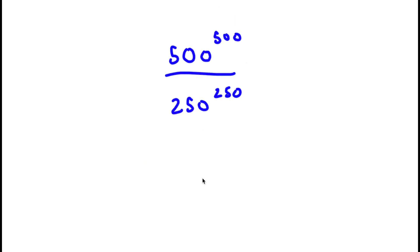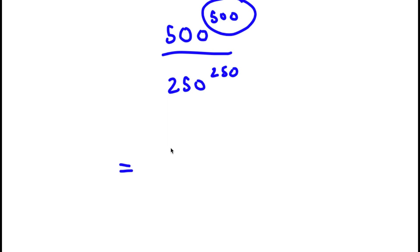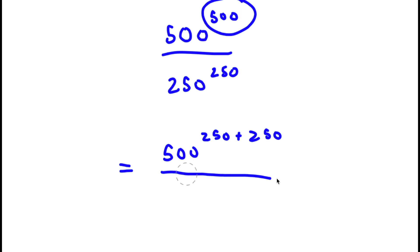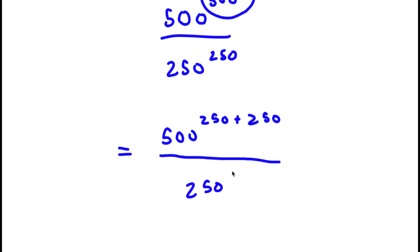In this problem, I have 500 to the power of 500 over 250 to the power of 250. What I'm first going to do is rewrite the exponent 500 as 250 plus 250. So now I have 500 to the power of 250 plus 250, over 250 to the power of 250.